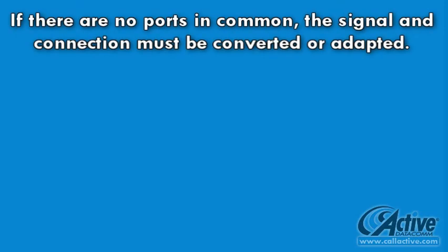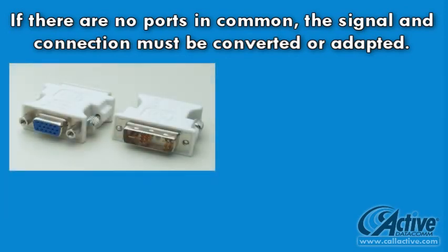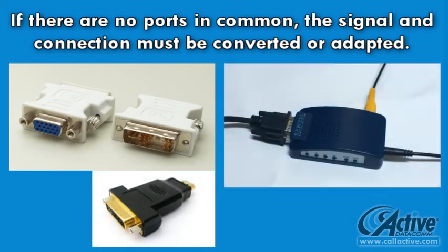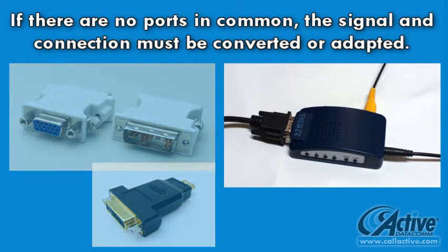Televisions that do not share a port with the PC will typically have one or more standard analog video inputs, such as composite video, S-video, or component video. For these televisions, a converter is required for connection to the PC, typically a device called a scan converter. A variety of scan converters exist that accept PC video via VGA or DVI and output the required signals for the television via composite, component, or S-video.